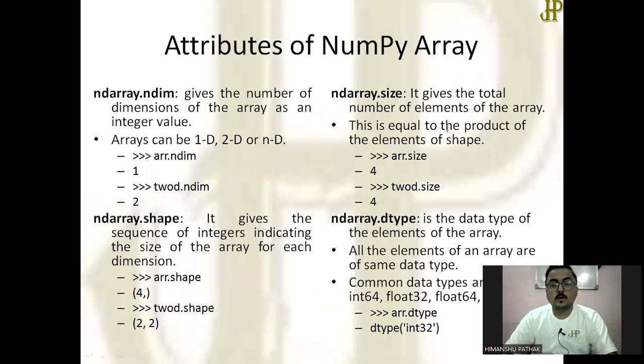What are attributes of NumPy array? You learned about how to create it and other types of creation of an array. Now some basic attributes I am going to discuss. First one is ndim. ndim gives the number of dimensions that are available in an array. Here you can see that arr.ndim gives 1, so it means arr array is one dimensional. 2d.ndim gives 2, so it means it is two dimensional array.